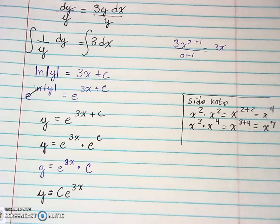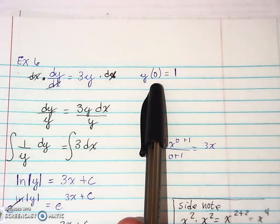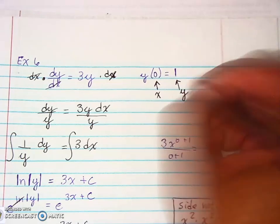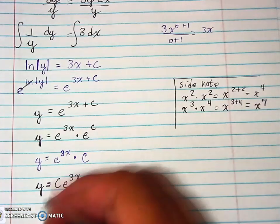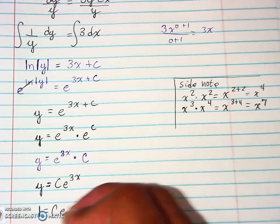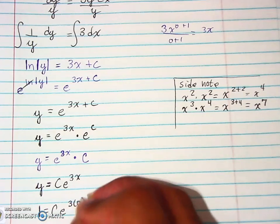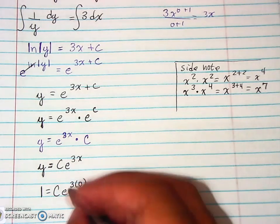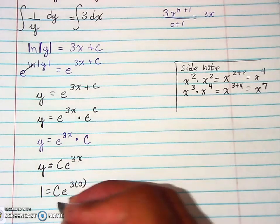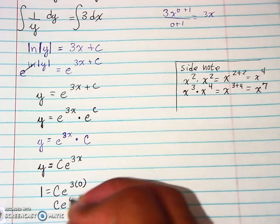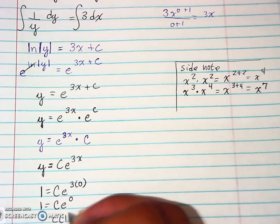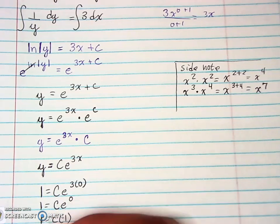Now we go ahead and deal with our initial value, and that initial value said y of 0 equals 1. So again, this is your x value, this is your y value. Substitute those in. We get that here, that gives us 0, so that would be C e to the 0. E to the 0 is 1, so pretty much C is equal to 1.